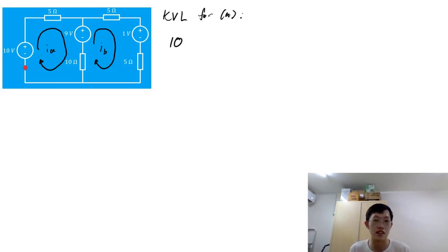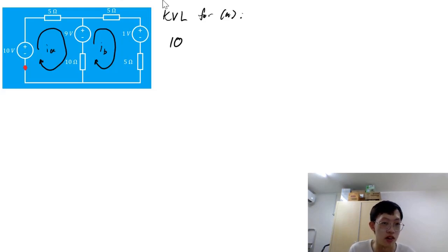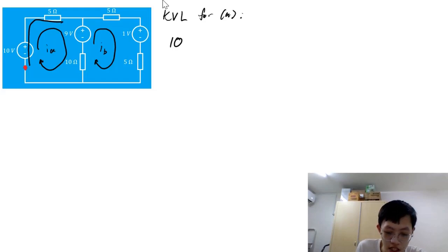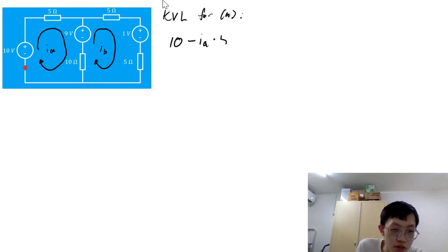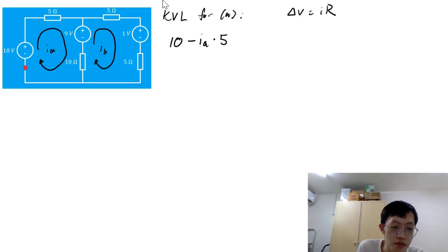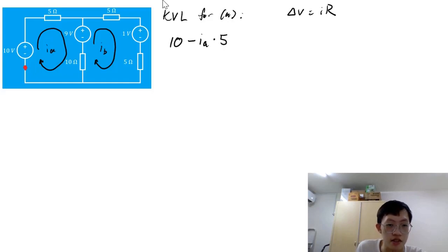KVL states that the algebraic sum of all voltage changes in a closed loop equals zero. After walking through the voltage source, we go through the 5-ohm resistor. The voltage change is given by delta V equals IR — going through the resistor is a voltage drop, so it's minus Ia times 5 ohms.